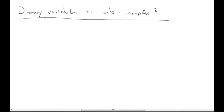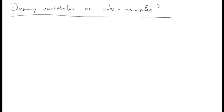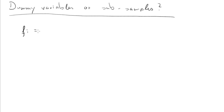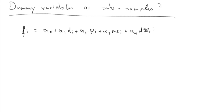Let me briefly describe the situation. We had a model where the dependent variable was airfares. The model was: alpha naught (the constant), plus alpha 1 times distance, plus alpha 2 times average passenger numbers for a particular route — where i indexes different routes — plus alpha 3 times market share of the largest airline. Then we had three dummy variables: alpha 4 for observations from 1998, alpha 5 for 1999, alpha 6 for 2000, and an error term.